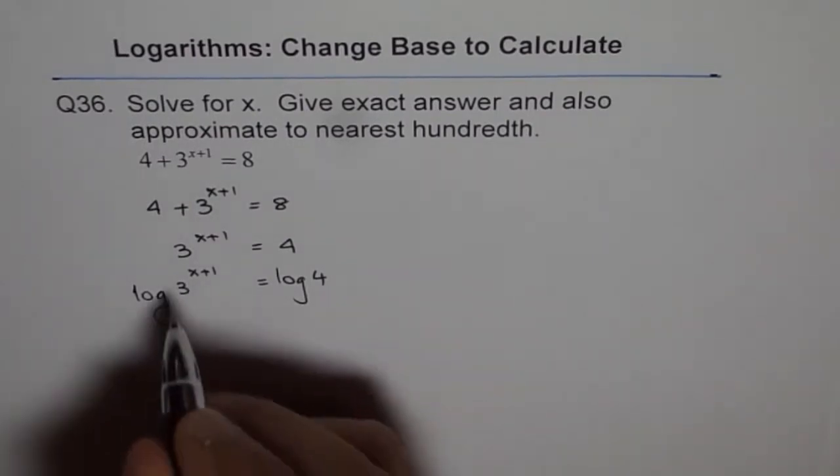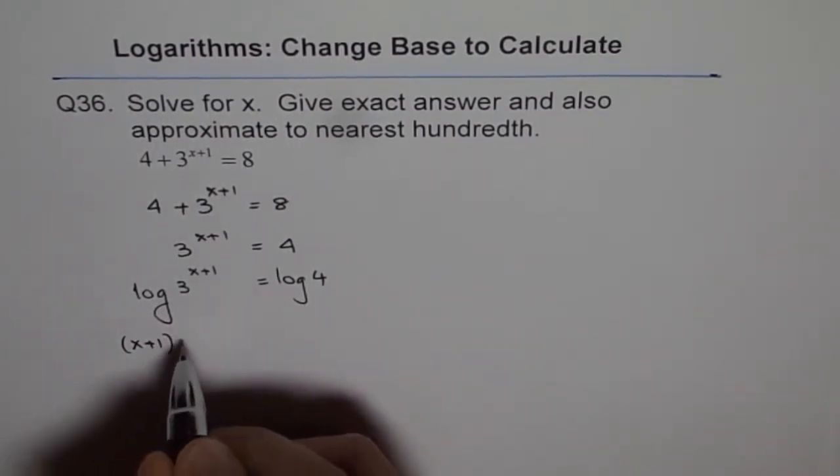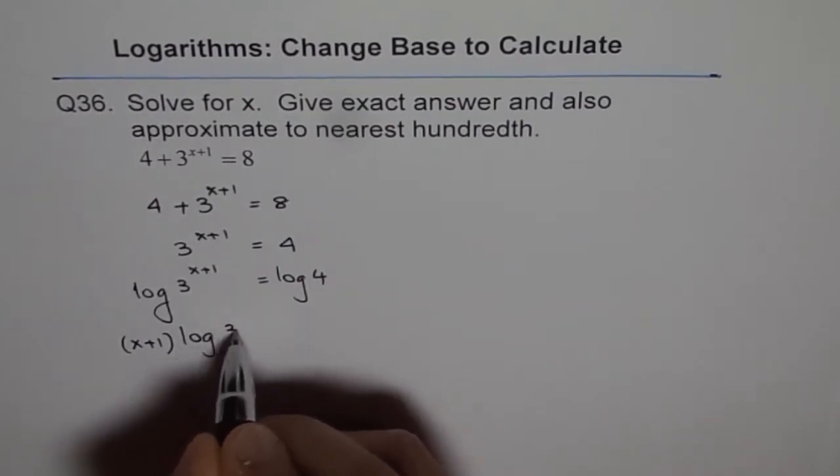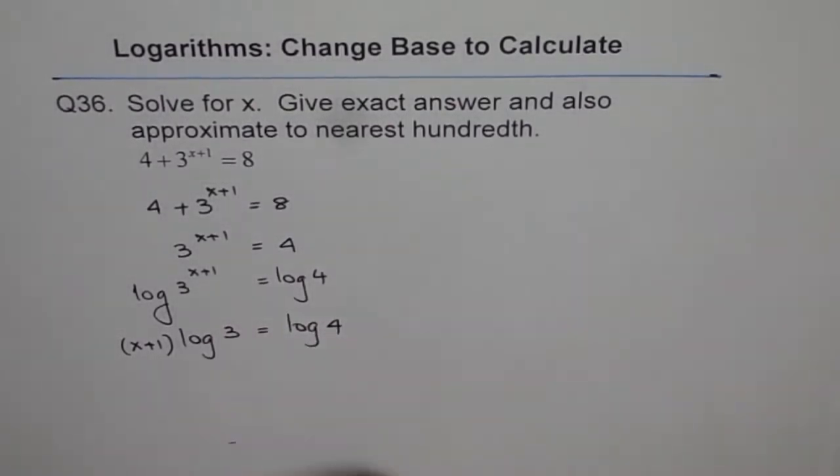Now from power rule, we can write this as x plus 1 times log of 3 equals to log of 4.